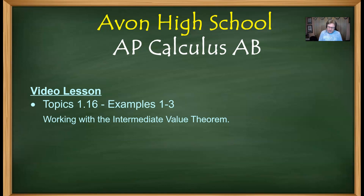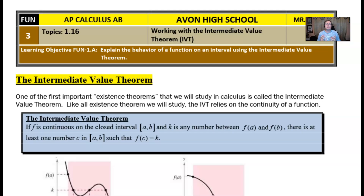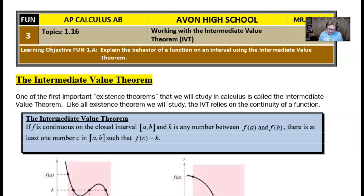Without further ado, we're going to get right into what this Intermediate Value Theorem is all about. Basically, what it is is an existence theorem. There are three very important existence theorems throughout calculus and this is the first you'll experience. It says that if f is continuous on the closed interval [a, b] and k is any number that lies between f(a) and f(b), there's at least one number c in the interval [a, b] such that f(c) = k.